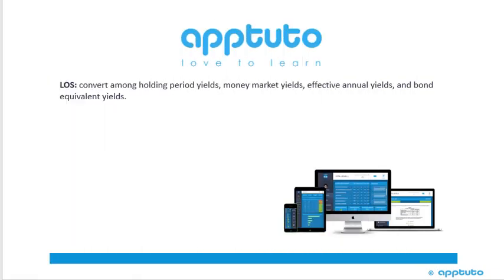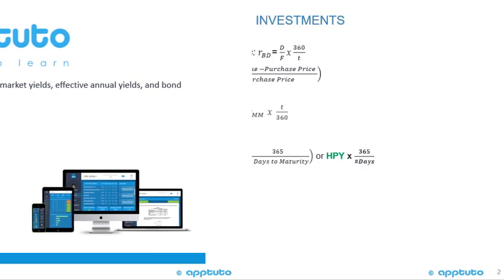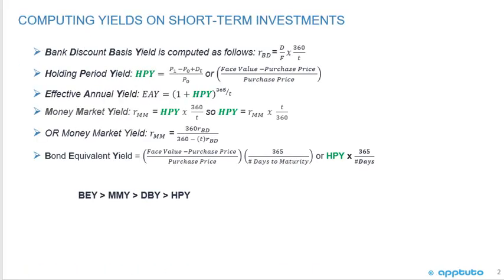This LOS is to convert among holding period yields, money market yields, effective annual yields, and bond equivalent yields. This is just a quick review of the formulas that we need.